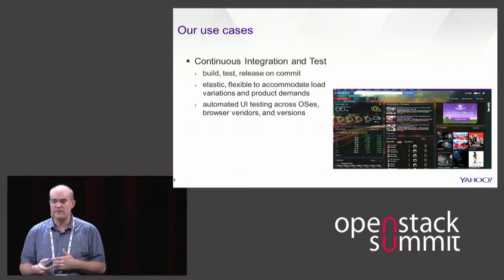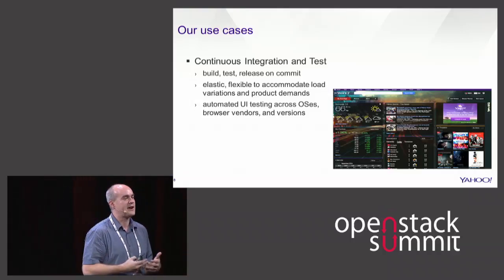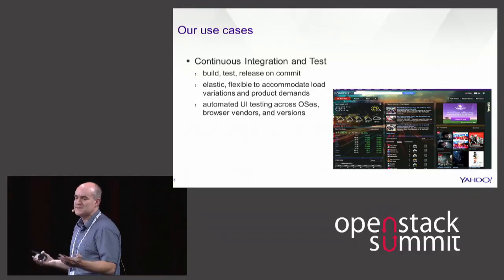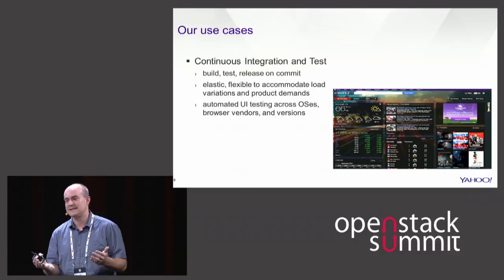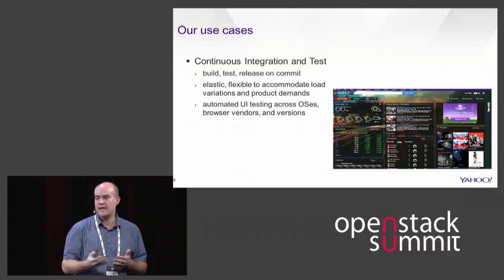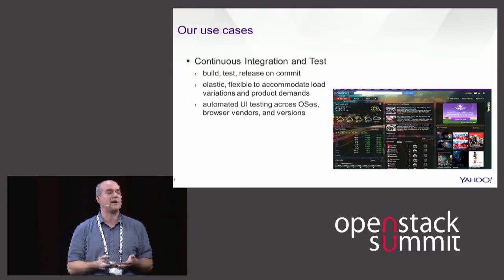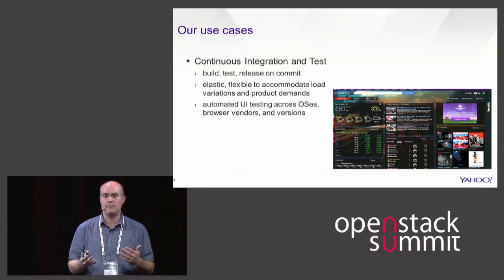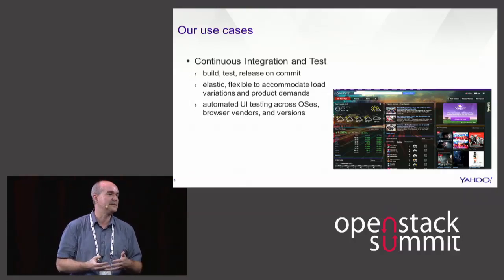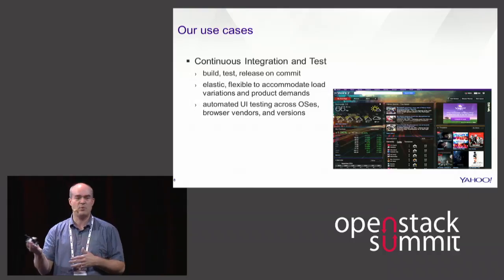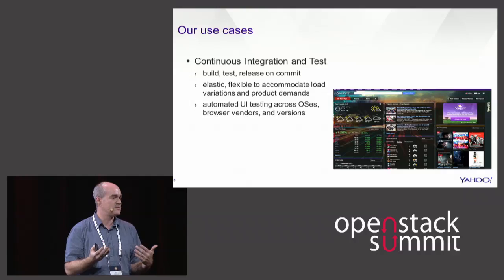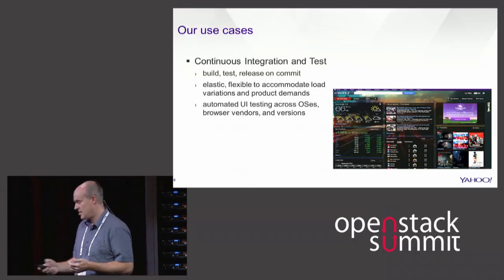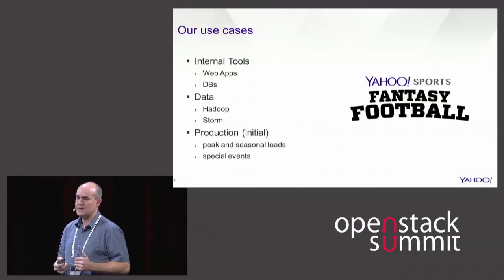Some other use cases we've initially tackled: CI is a natural fit. The variable loads as developers come into work, check things in, and need to do builds on commit — OpenStack is a natural for that, given its elasticity and flexibility to accommodate these workloads. Another thing we need to do a lot of is browser validation. Whenever a new web experience is created, there's a tremendous number of browsers we have to do backward compatibility testing on. We've plugged Windows into the OpenStack infrastructure and have a lot of validation testing going on effectively.